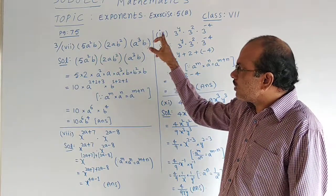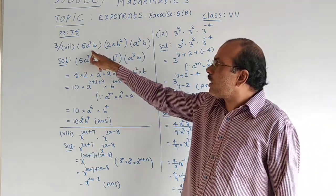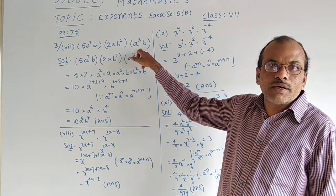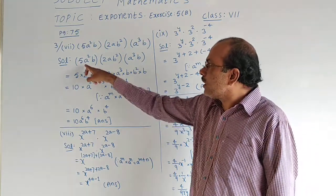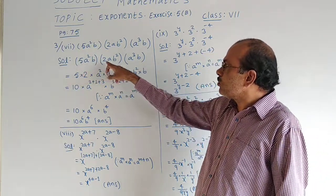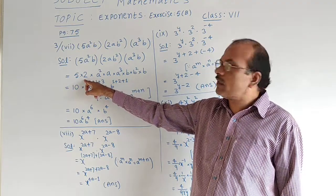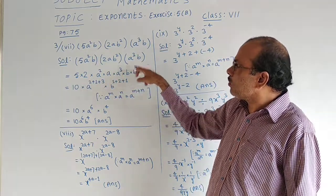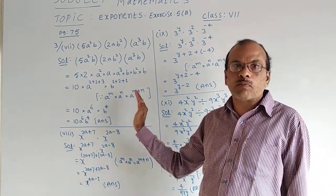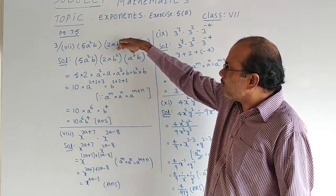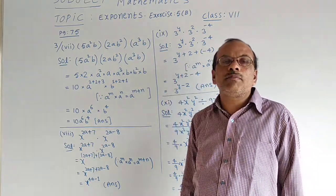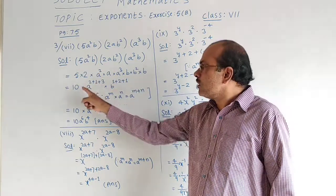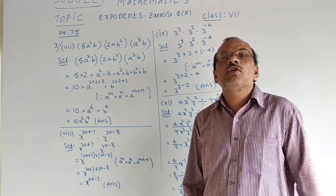We have to evaluate and simplify: 5a²b × 2ab² × a³b. The question is written once again. So 5 and 2 I have written separately. Into a², a, a³ — all the terms related to a are in one place. Again the b, b², b — all the b terms are in one place. And the numbers are written separately with multiplication symbols between them.